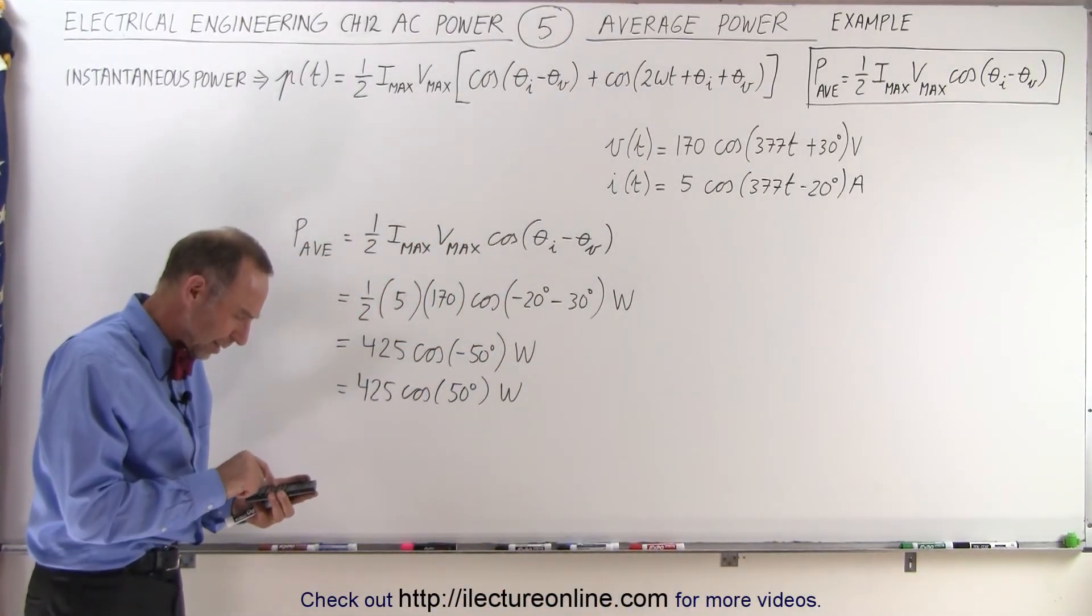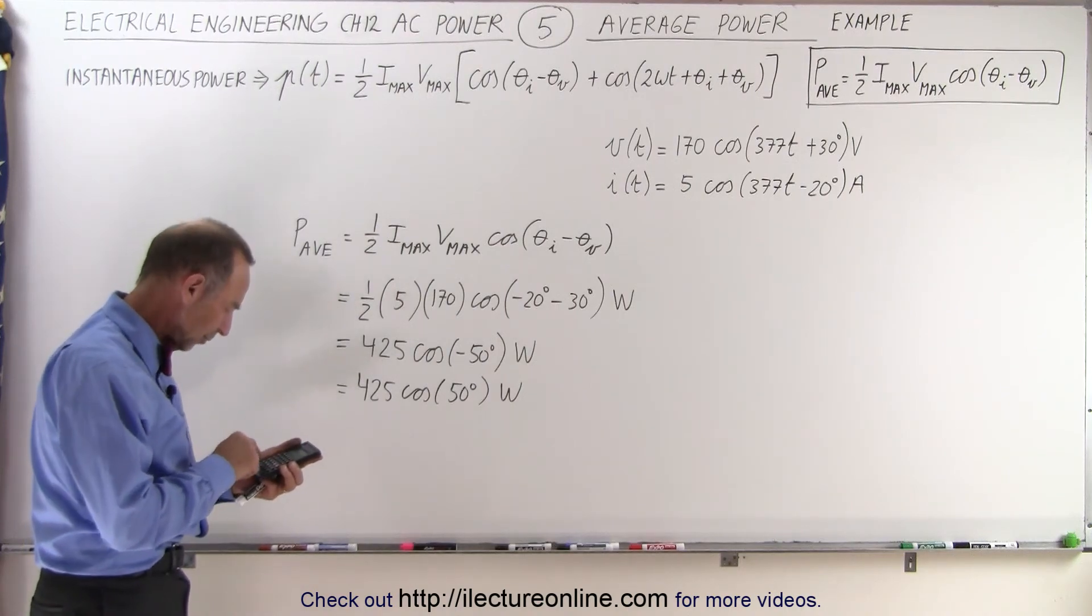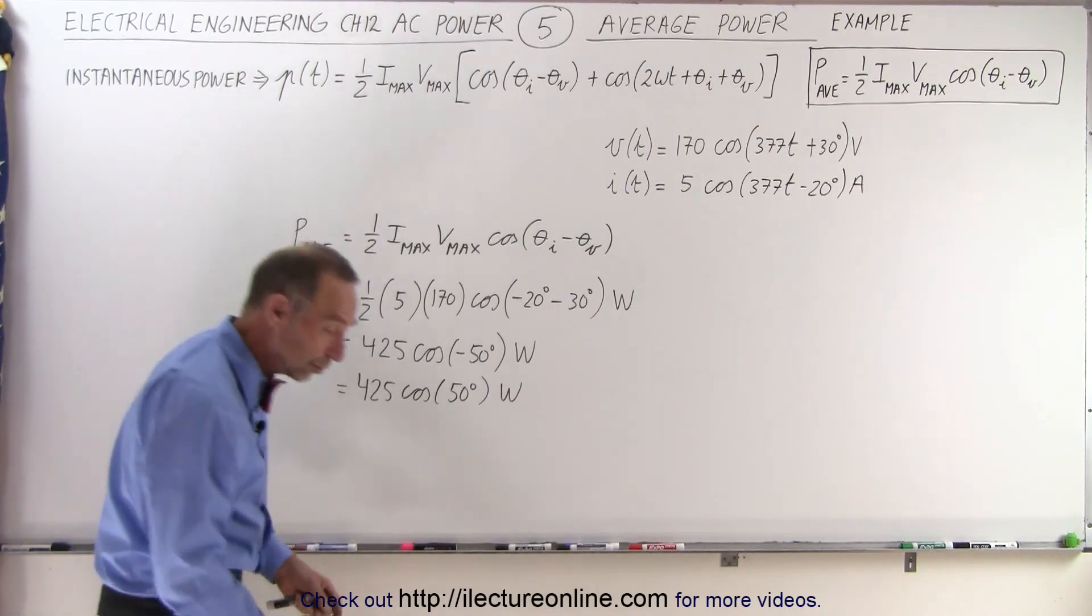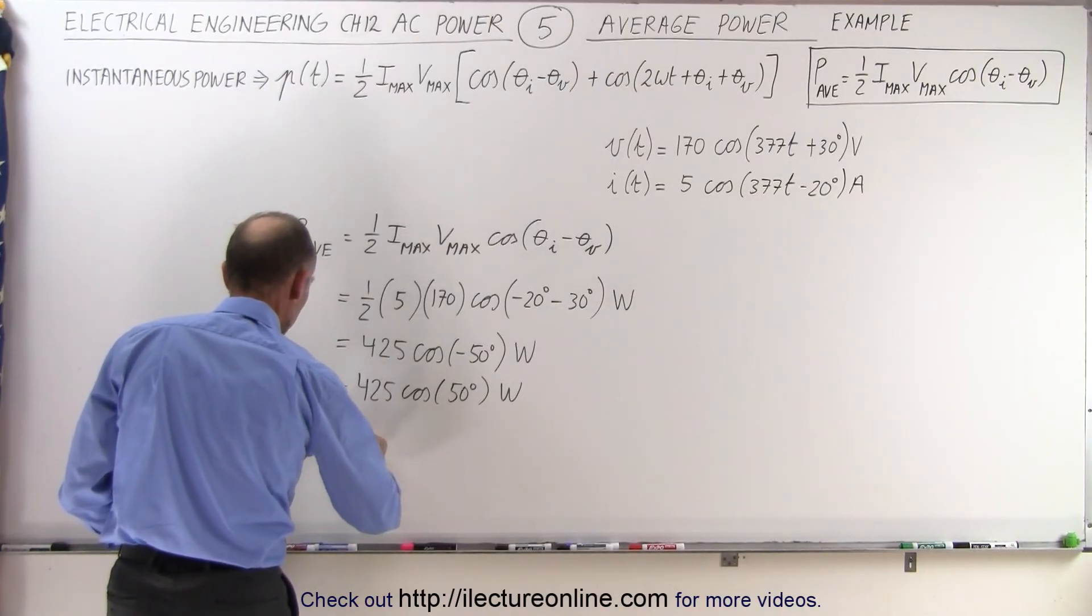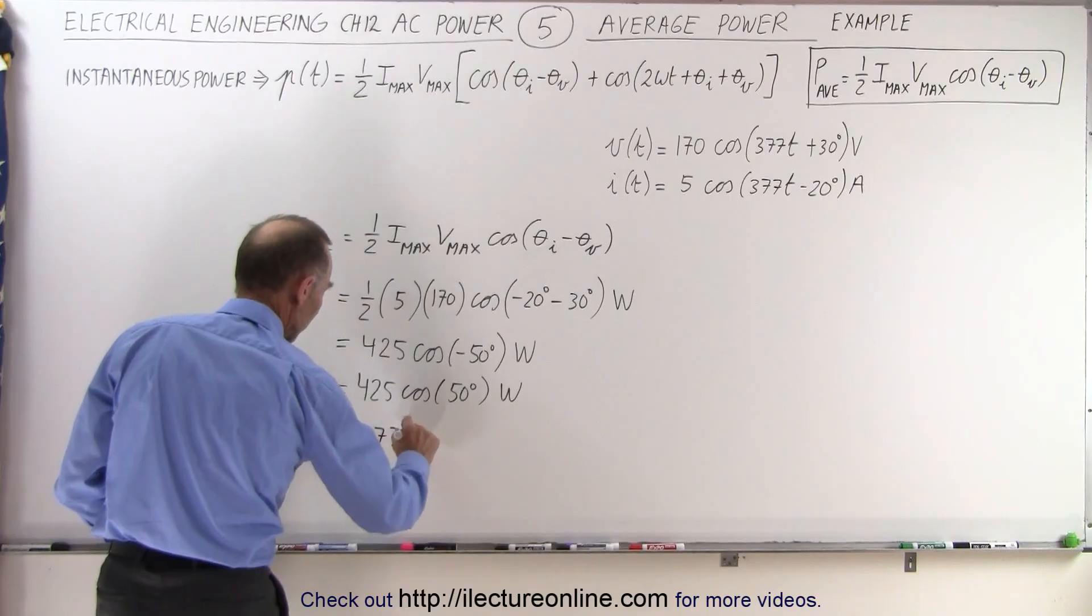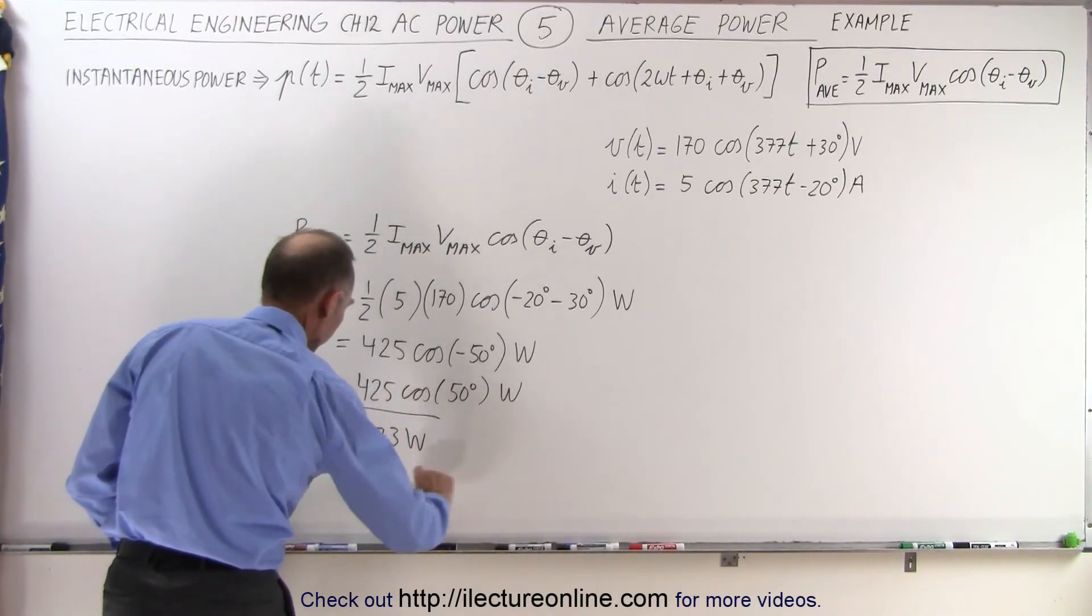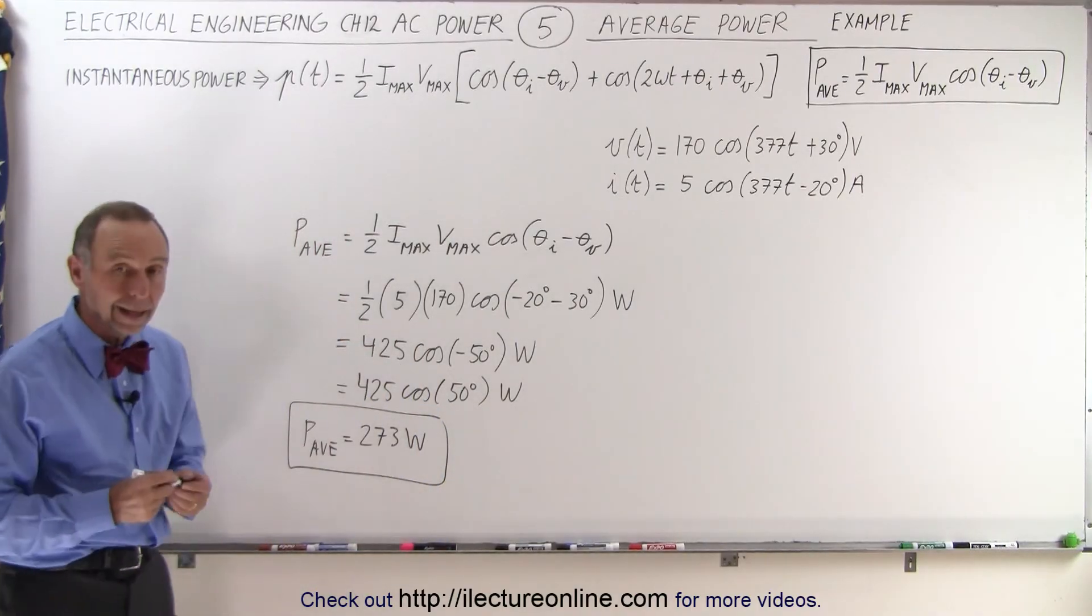50, take the cosine, and multiply times 425, and we get 273. So the average power would be equal to 273 watts. And that's how we do it.